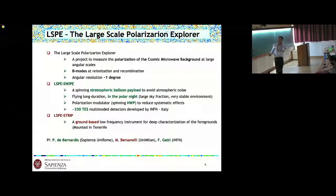This is a project to measure CMB polarization at large angular scales, in particular to try to go for the B-modes at the reionization recombination bump of the power spectrum. The angular resolution is about one degree. It's composed by two instruments: SWIPE, a spinning stratospheric balloon payload flying at 40 kilometers to avoid atmospheric noise.